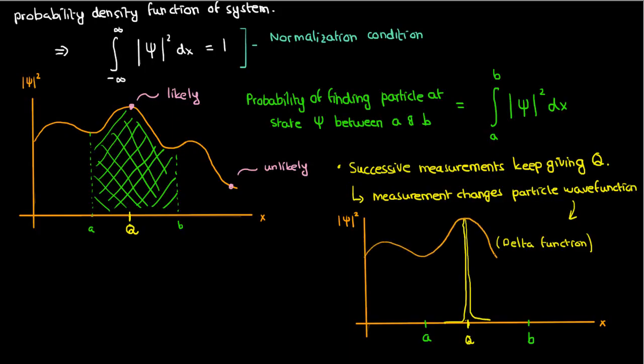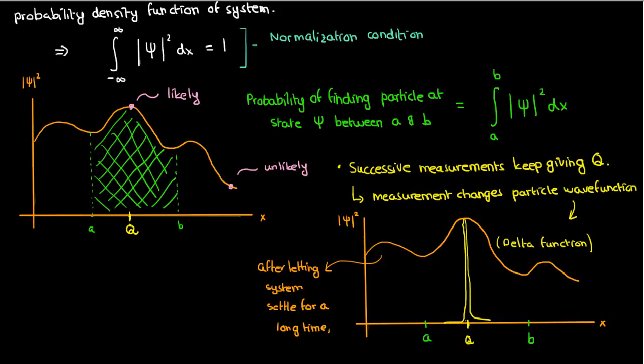However, if I let the system settle so that it eventually occupies the original wave function it had, and then take my measurement, I might get something different according to the probability distribution corresponding to my original wave function. The name of the phenomenon where the particle's wave function changes to a delta function after a measurement is called a wave function collapse.